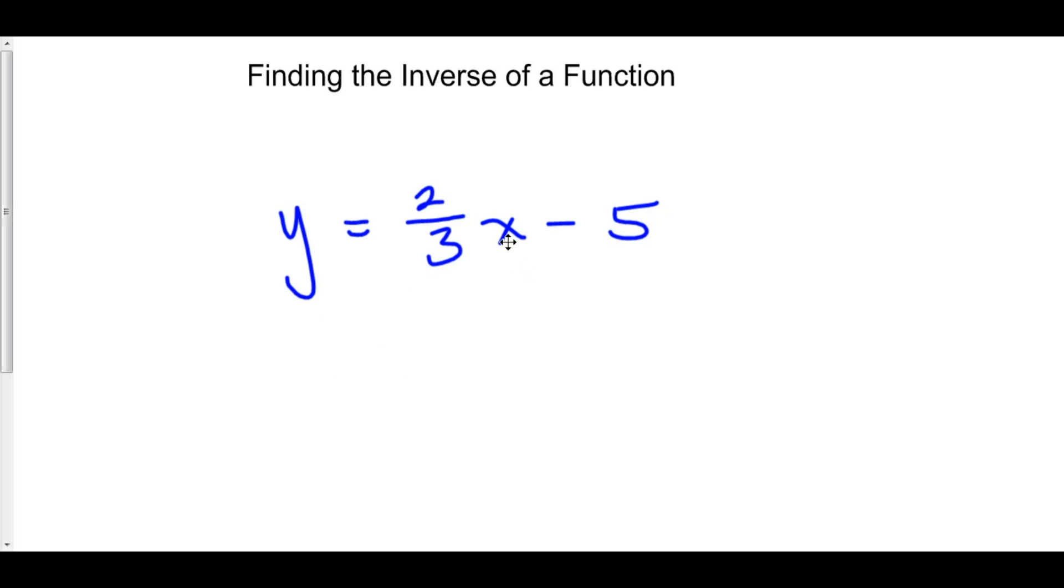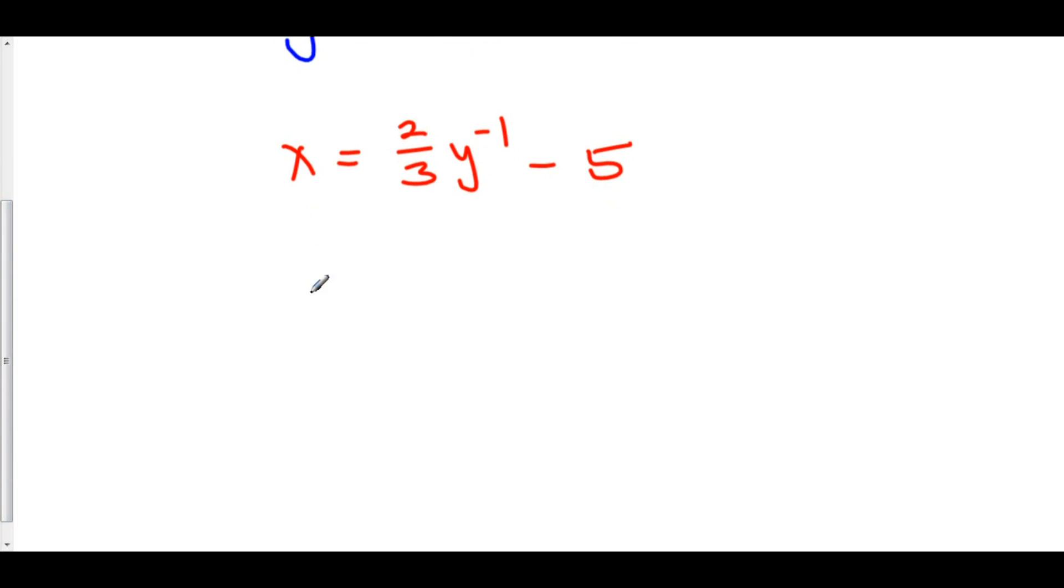By switching x and y, we therefore come up with our inverse. So, here's what we do. We write x is equal to 2/3 y inverse minus 5. Now, keep in mind, this is not 1 over y. That's not what this notation means. This notation means the inverse of y.